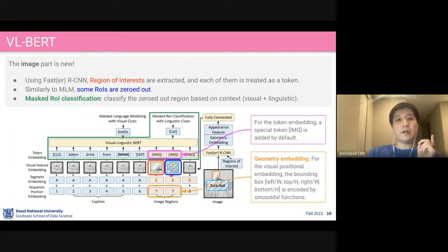For this visual part, this is a little bit new here. Because we don't have text words here, just some special image tokens are used. Then for the image part, we run the pre-trained Faster R-CNN to find out the region of interest.